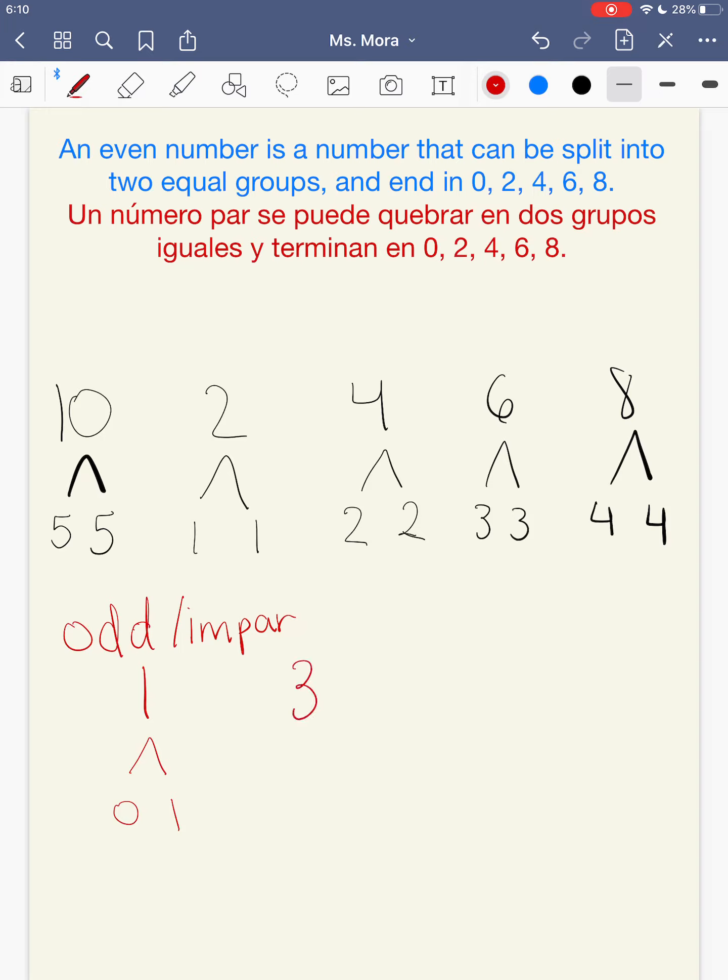What about the number 3? 3, if you add 2 and 1 together, that's not an even number. That's odd, because 2 and 1 are not equal groups. El 3 es impar, porque 2 y 1 no son grupos iguales.